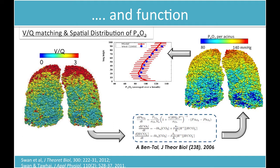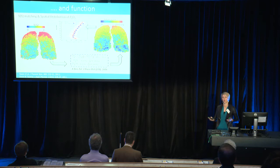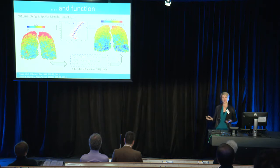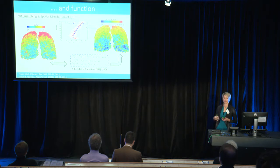Once we put ventilation distribution and perfusion distribution together, we can then simulate gas exchange. This is occurring at approximately 32,000 individual gas exchange units in your lung, and we simulate that at that level of detail. The variability that we predict — and that we know is present physiologically — is really important, both the variability present at baseline and when we start to overlay additional aging or pathology.